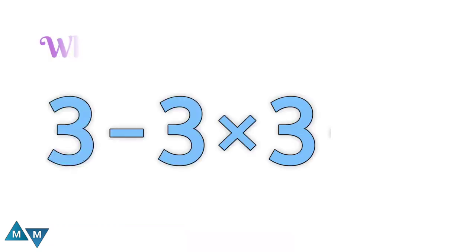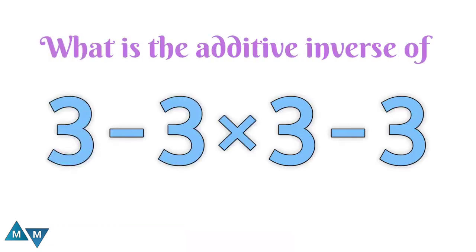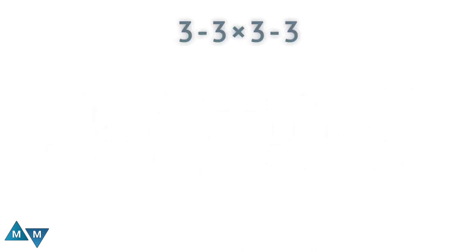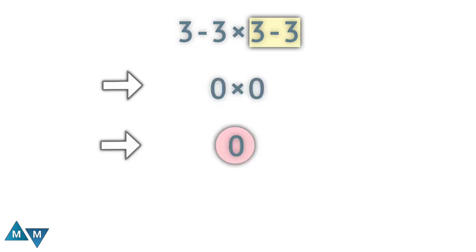Hi guys, look at this problem. What is the additive inverse of 3 minus 3 times 3 minus 3? We've seen a lot of people do it in the following way: 3 minus 3 is 0, right? And this 3 minus 3 also gives 0. So it's 0 times 0, and the answer will be 0. Wrong! This is the wrong way to solve it.